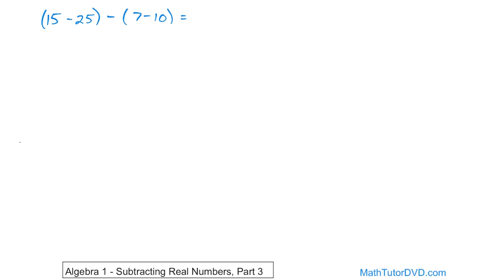First of all, you know that when you have parentheses, you really always need to do what's inside the parentheses first. That's the order of operations we talked about. So let's go ahead and do the 15 minus 25, and we'll do the 7 minus 10, and then we'll mess around with this subtraction much later.